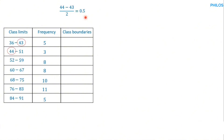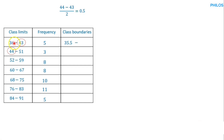To get the first class boundary, we take 36 minus 0.5, which gives 35.5 for the lower boundary. Then we add 0.5 to the upper limit 43, giving 43.5. So the first class boundary is 35.5 to 43.5. For the next class, 44 minus 0.5 gives 43.5, and we add 0.5 to 51 to get 51.5.